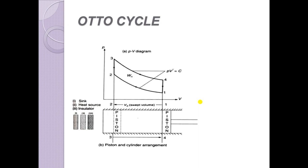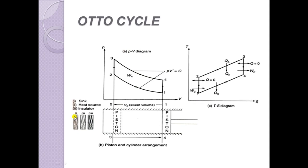The Otto cycle is a theoretical cycle on which petrol, gasoline, and gas engines work. Heat is supplied and rejected by means of a source and sink, which are alternatively brought in contact with the cylinder head. The cycle consists of two constant volume and two isentropic processes. We make use of a piston-cylinder arrangement, which is taken as a perfect insulator excluding the cylinder head.